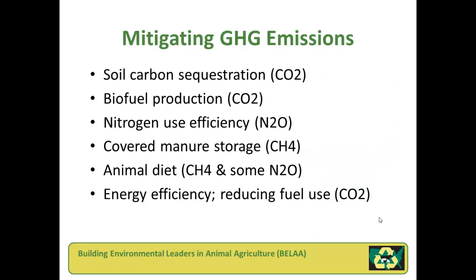The next topic is mitigation. There are many ways to mitigate or reduce agriculture's greenhouse gas emissions. On this slide, they're listed loosely in order of potential, with items near the top having the greatest mitigation potential. This is based on a review of several information sources, and items close to each other could be shifted up or down, but as a general rule, items at the top have more potential than those at the bottom.